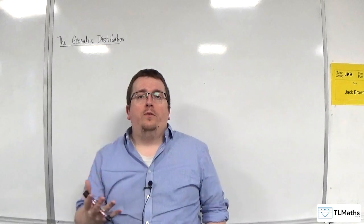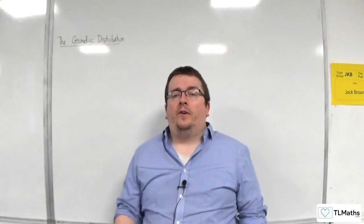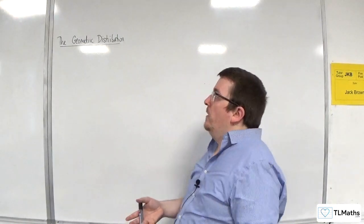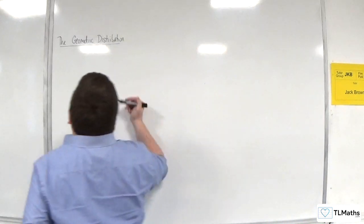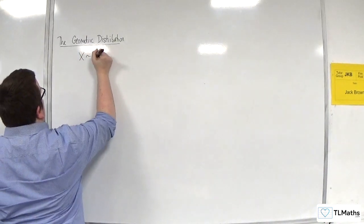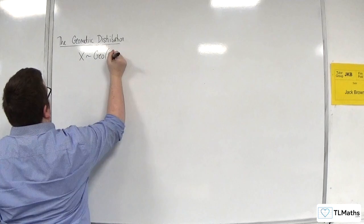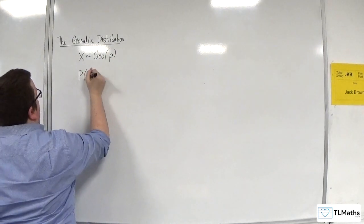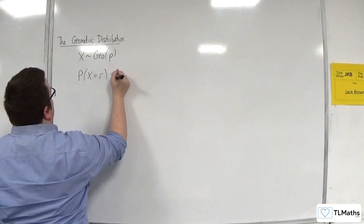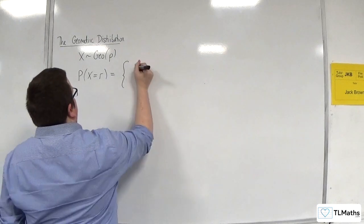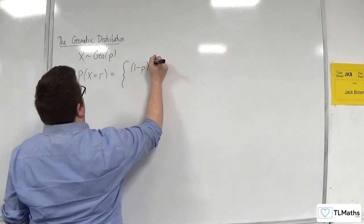In this video I want to go through E of X and VAR of X of the geometric distribution. So we know that if X is a geometric distribution with probability P, then the probability of X being equal to R is equal to 1 minus P to the power of R.